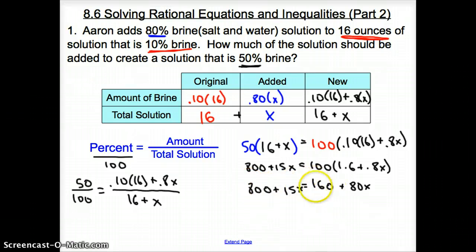Now we solve for x. I'm going to subtract the 160 over here to get 640 equals 30x. I divide by 30 to get 21.3 repeating or 21 and a third for x. So we are adding 21 and a third ounces to our solution so we can have a 50% brine solution.